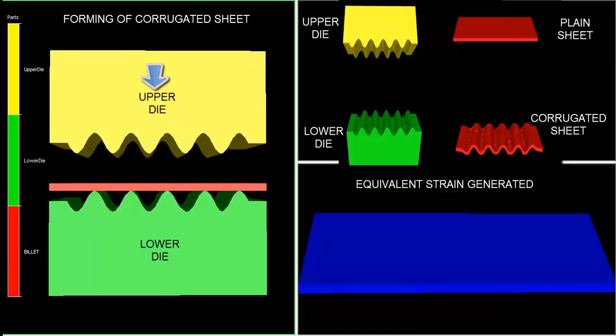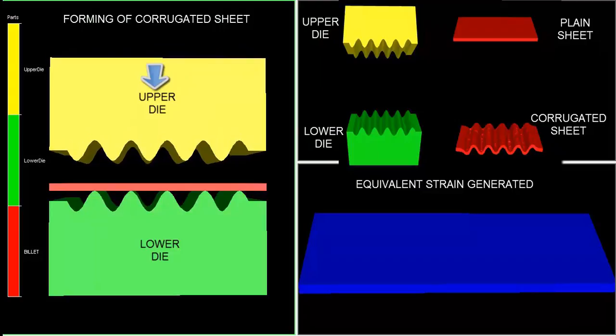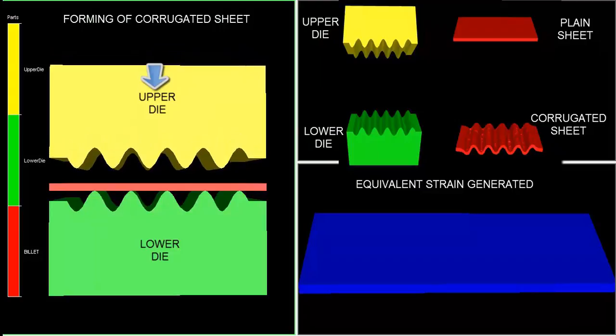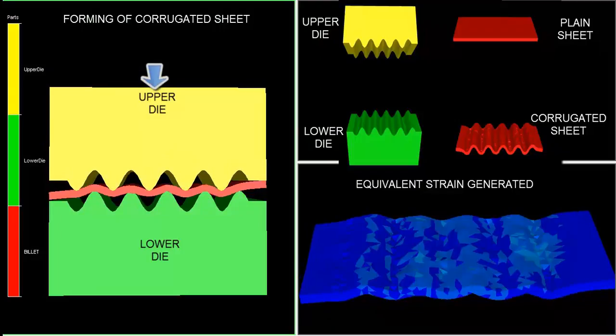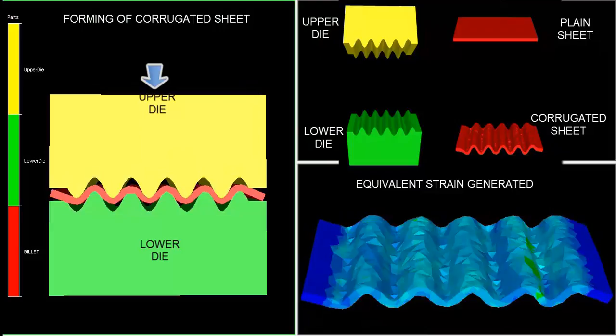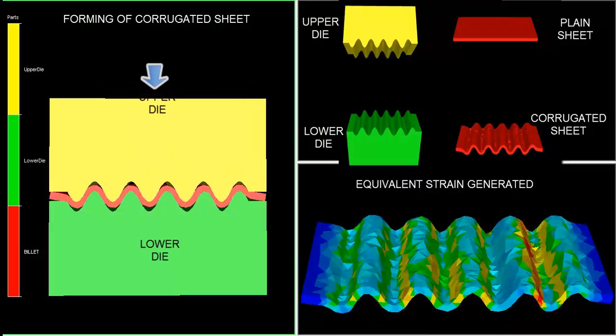Corrugated sheet forming is normally done in two steps, but for ease of simulation, both are made in a single step. Consider the various parameters of the forming simulation: the material of the billet is plain carbon steel and the temperature of the billet is 20 degrees Celsius.